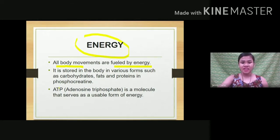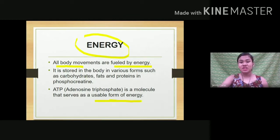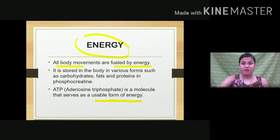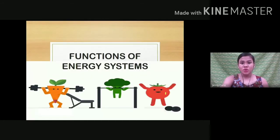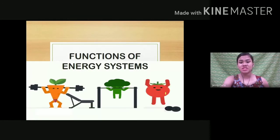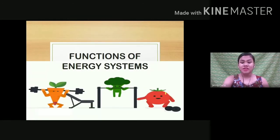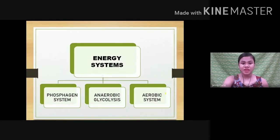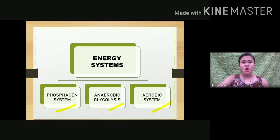ATP is a molecule that serves as a usable form of energy. It is in charge of distributing or supplying energy to our body so we can make movements. The types of energy systems we have are the phosphagen, anaerobic, and aerobic systems, each with specific functions.